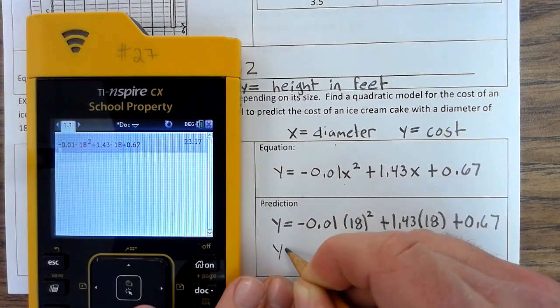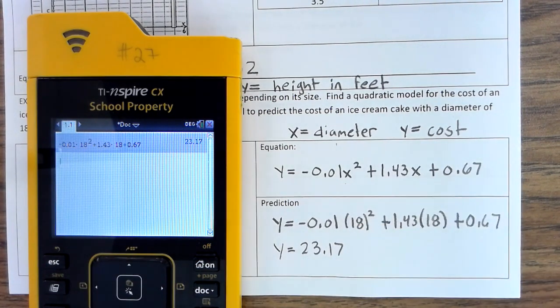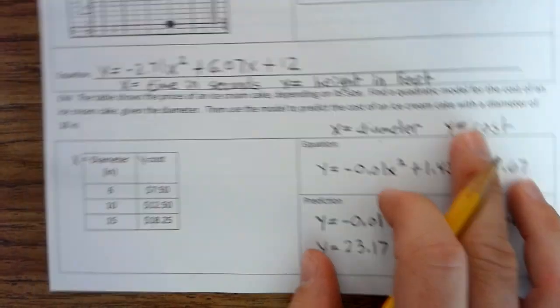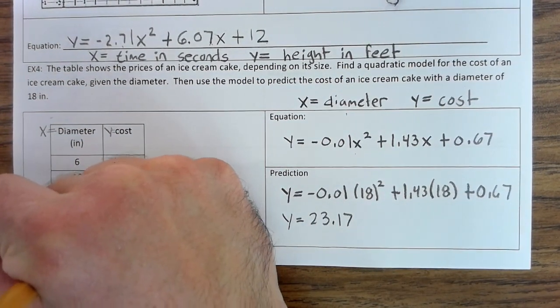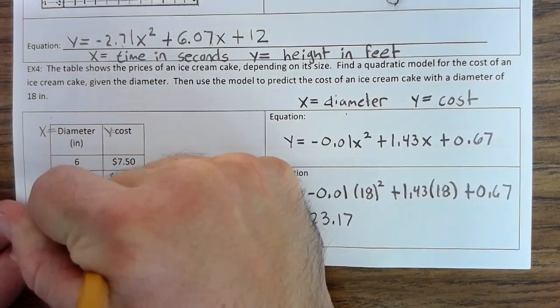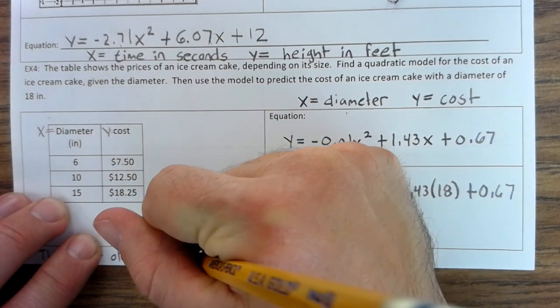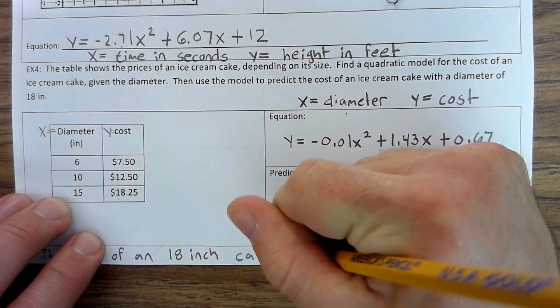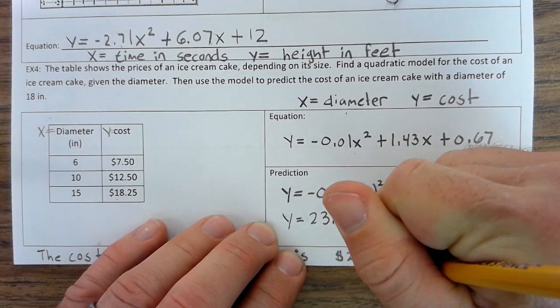So, Y equals $23.17. Okay, so what you would say is the cost of an 18-inch cake is $23.17.